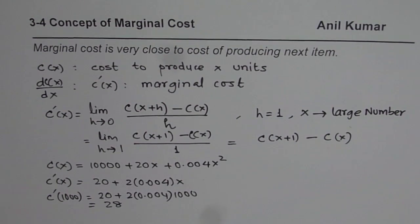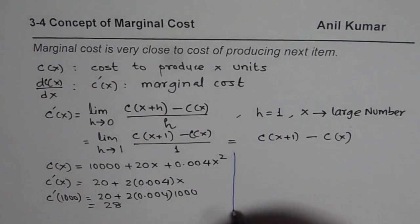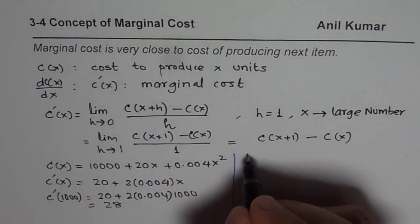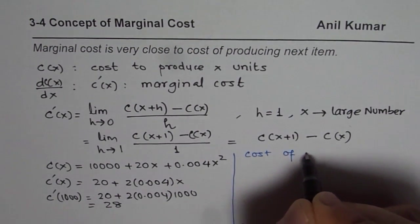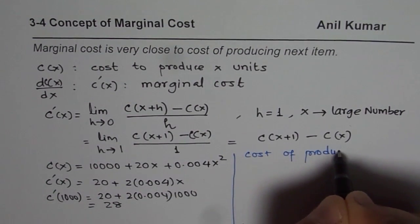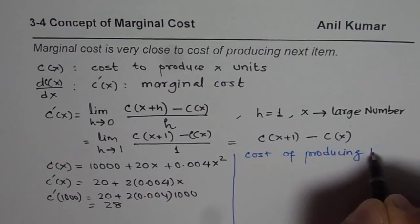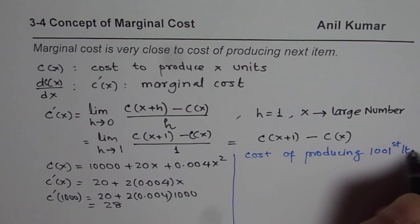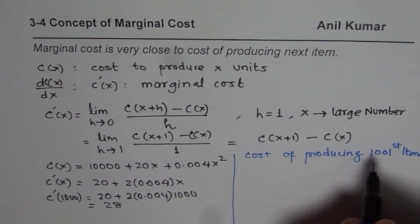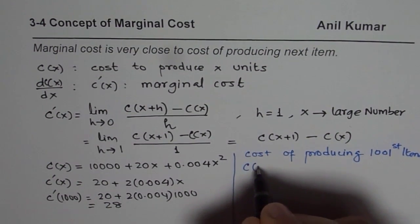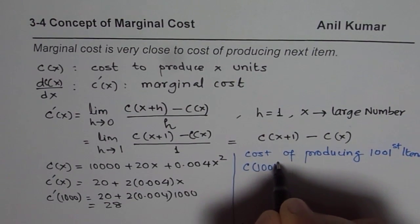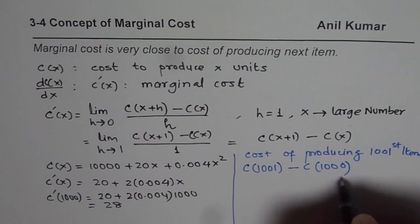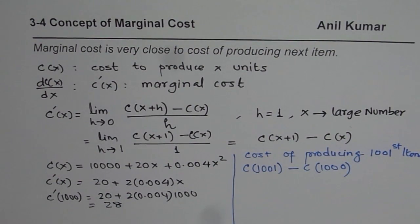On the other hand, let us also calculate the cost of producing the 1,001st item. We can find that by finding the difference between the cost of producing 1,001 items minus the cost of producing 1,000 items. So that should give you the value of the cost of that additional item.